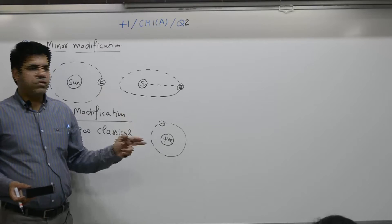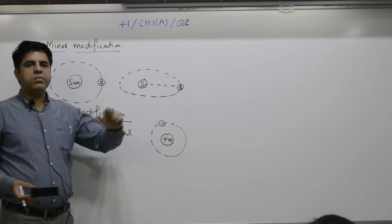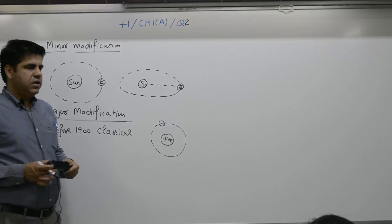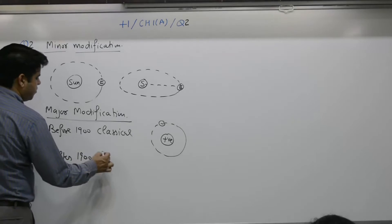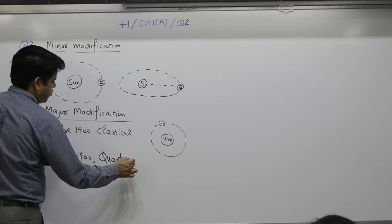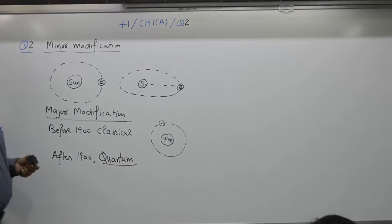Why it is so, why electron jumps from higher orbit to the lower orbit - number of things to be covered in chapter number seven. After 1900, rather 1905, but I can write 1900, quantum mechanics, quantum theory was given.